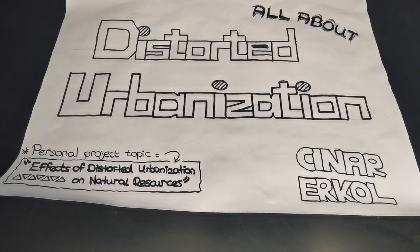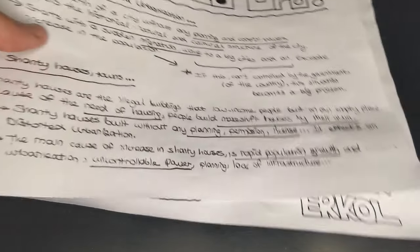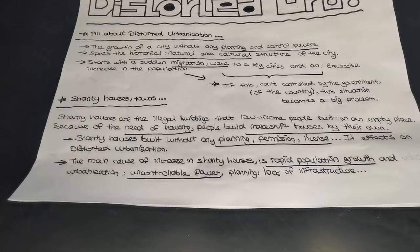Let's talk about what is distorted urbanization. Distorted urbanization is the growth of a city without any planning and control powers. This means that a city, for example Istanbul, has no city planning or no control powers to check the situation in Istanbul.